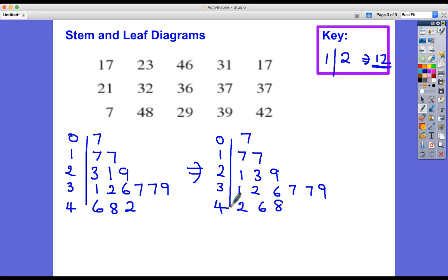Now how many data values do I have? 1, 2, 3, 4, 5, 6, 7, 8, 9, 10, 11, 12, 13, 14, 15.